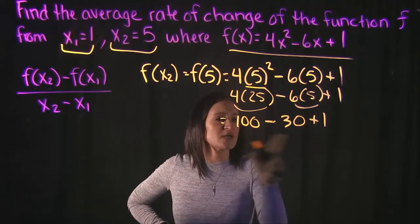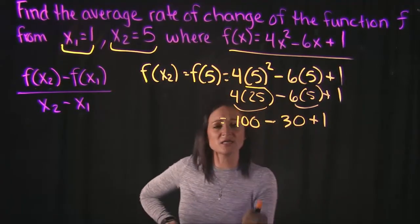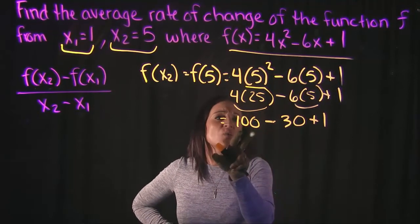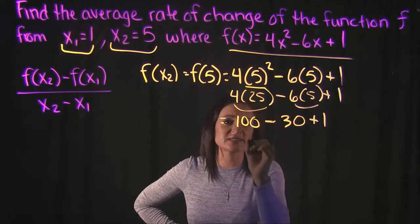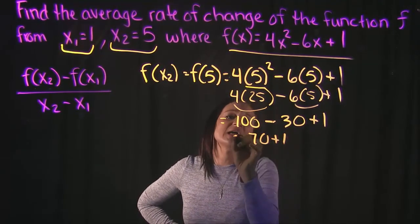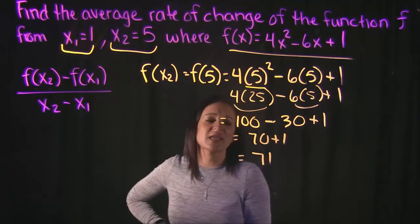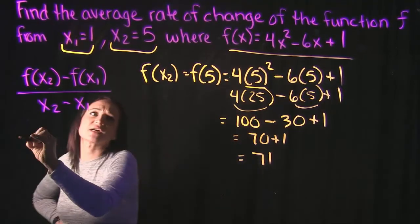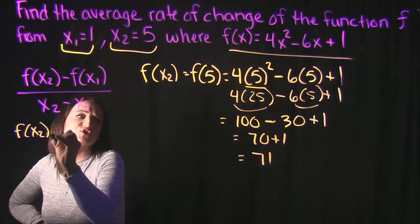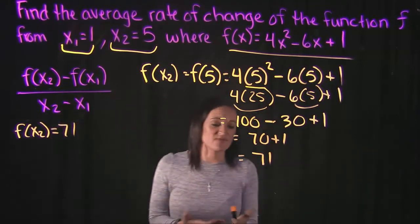So all we have to do here is add and subtract in the end, going from left to right. 100 minus 30 is equal to 70 and 70 plus 1 is 71. So that tells us that f(x2) is equal to 71.